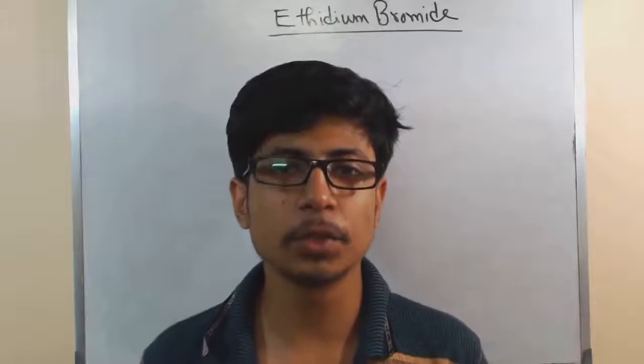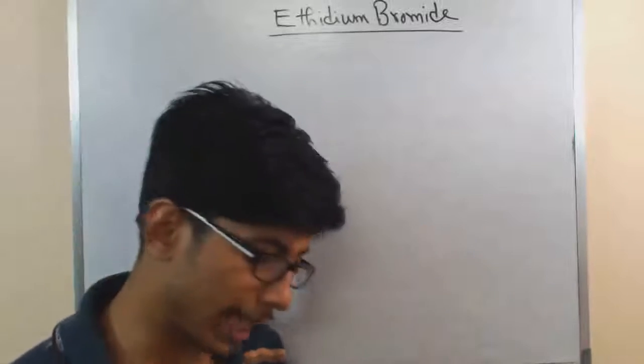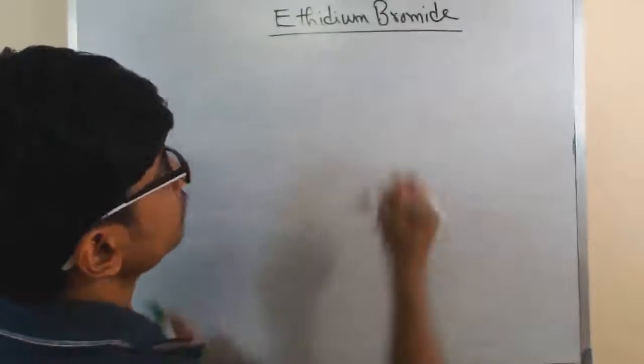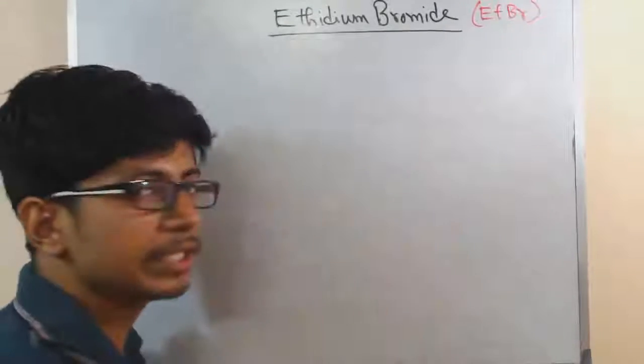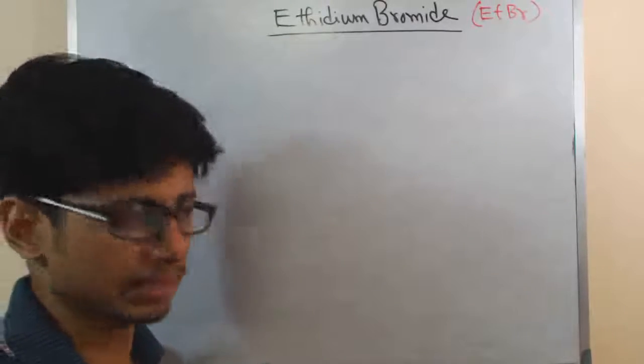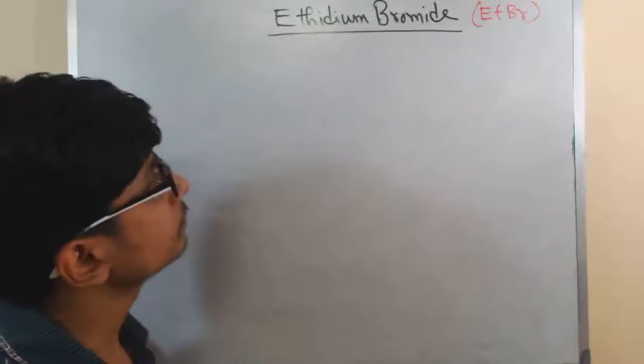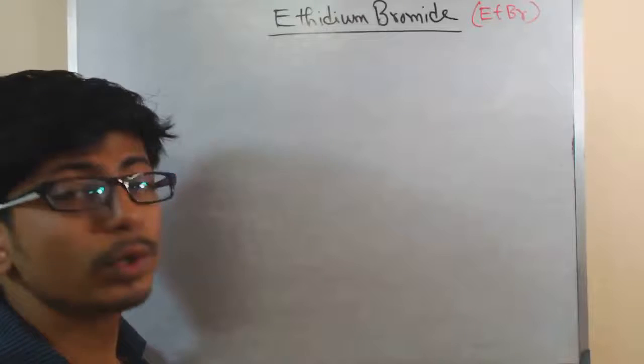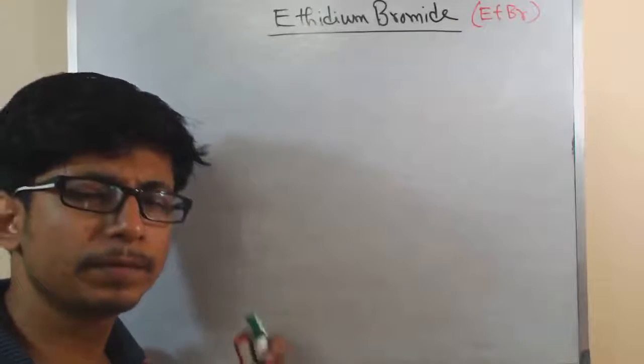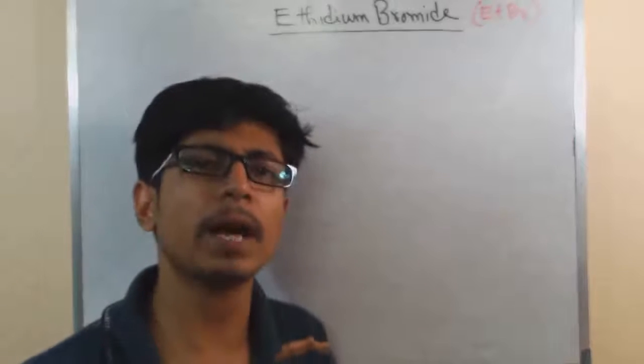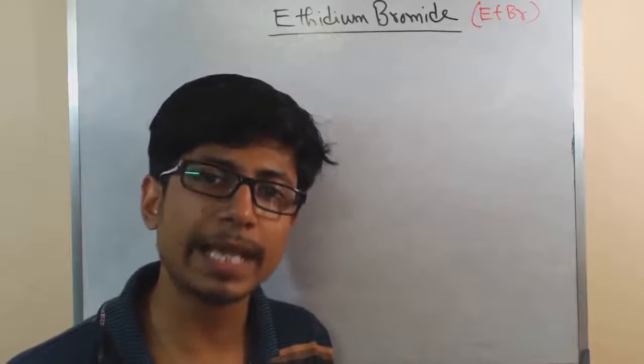Welcome again friends, in this video tutorial we'll be talking about ethidium bromide, which is also known as ETBR. Ethidium bromide is a fluorescent molecule which is vastly used in molecular biology techniques during agarose gel electrophoresis to stain the gel.